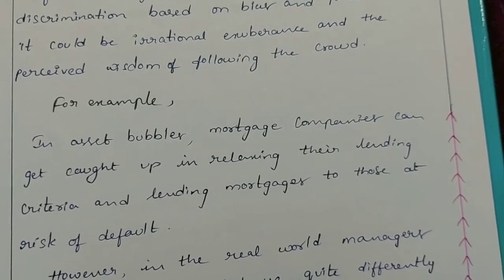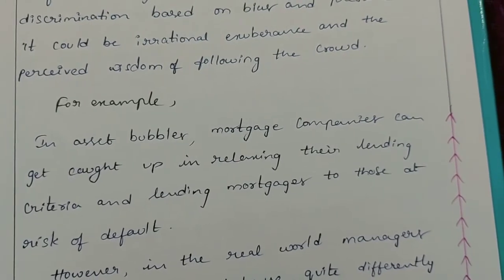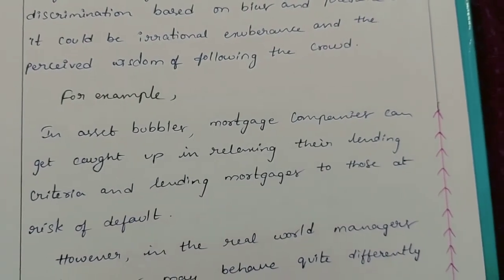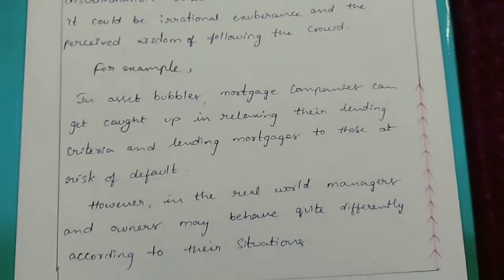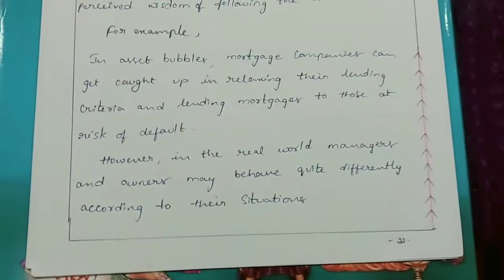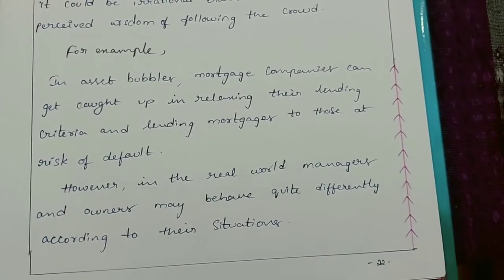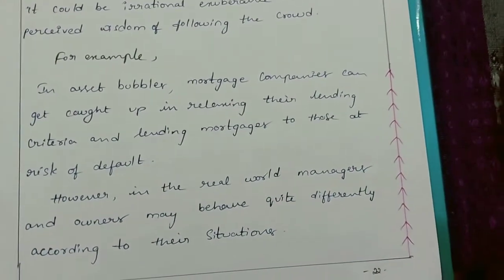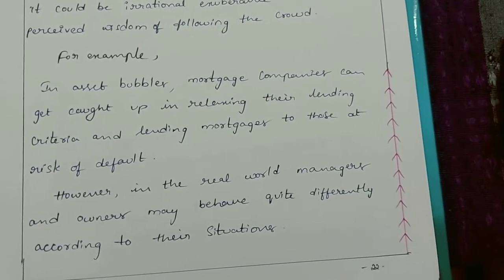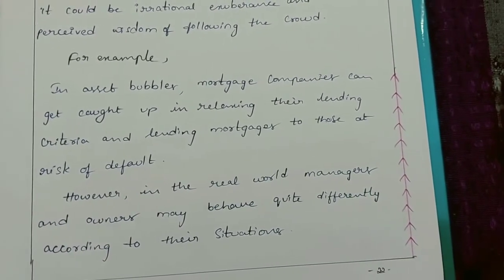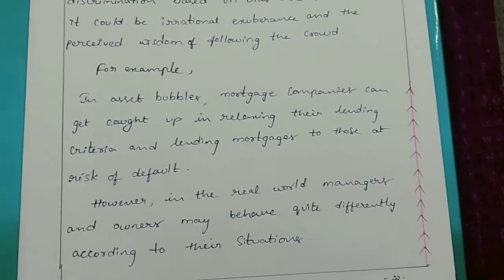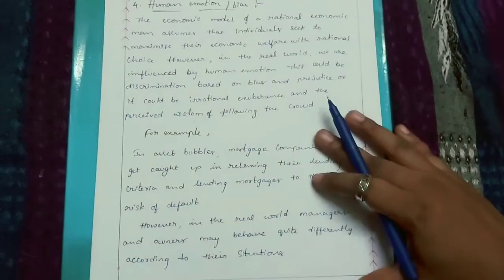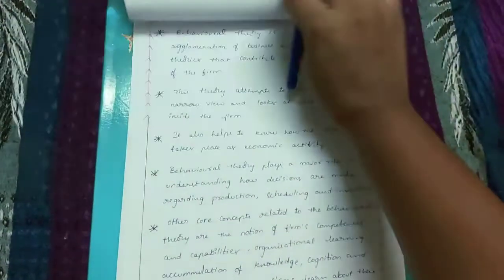For example, in asset bubbles, mortgage companies can get caught up in relaxing their lending criteria and lending mortgages to those at risk of default. However, in the real world, managers and owners may behave quite differently according to their situations.